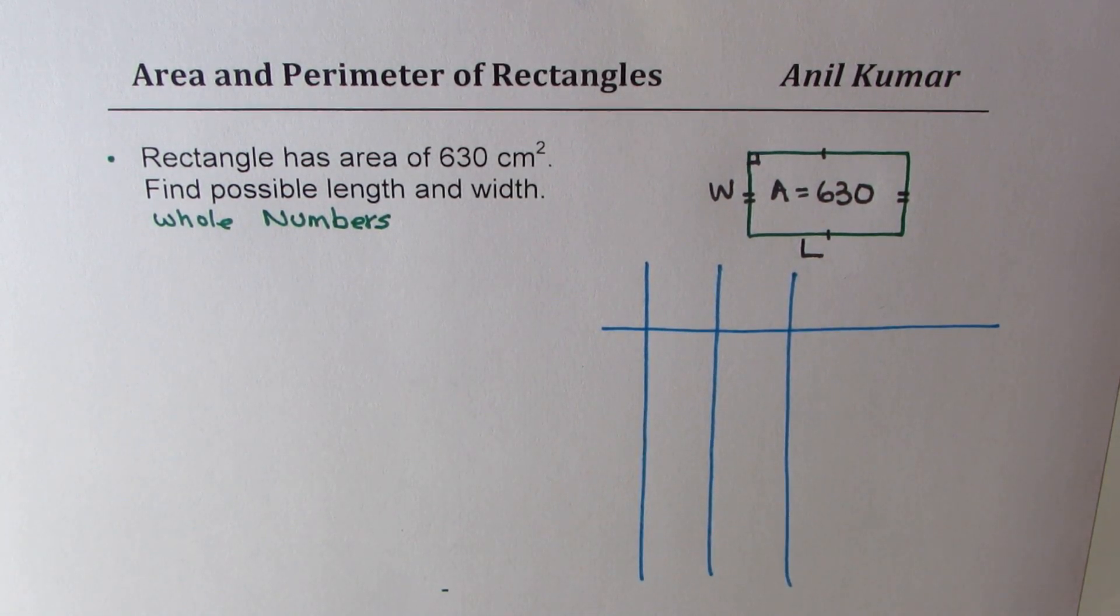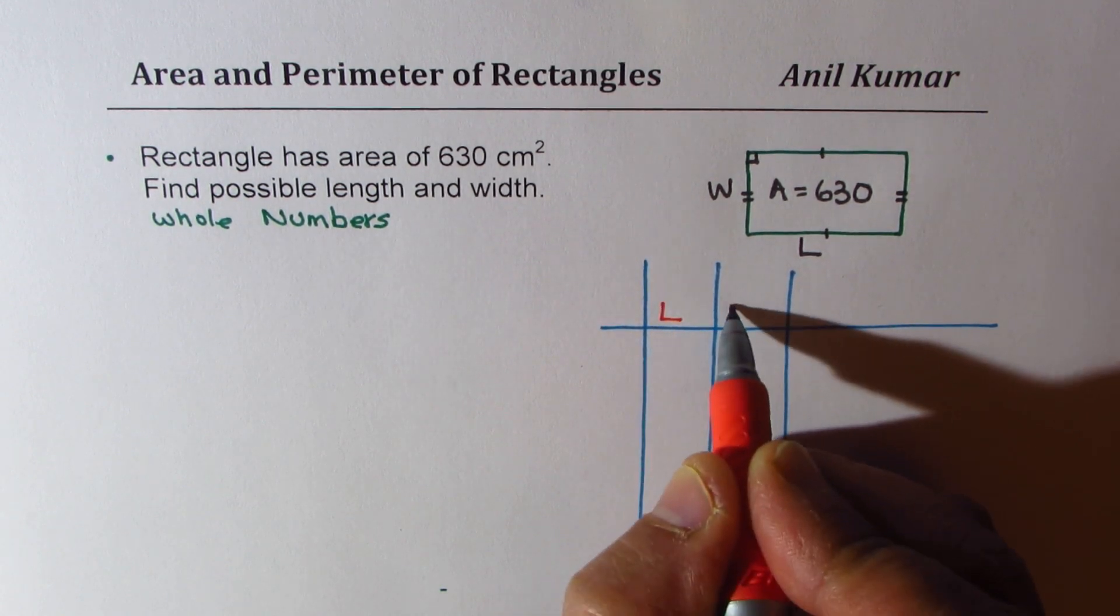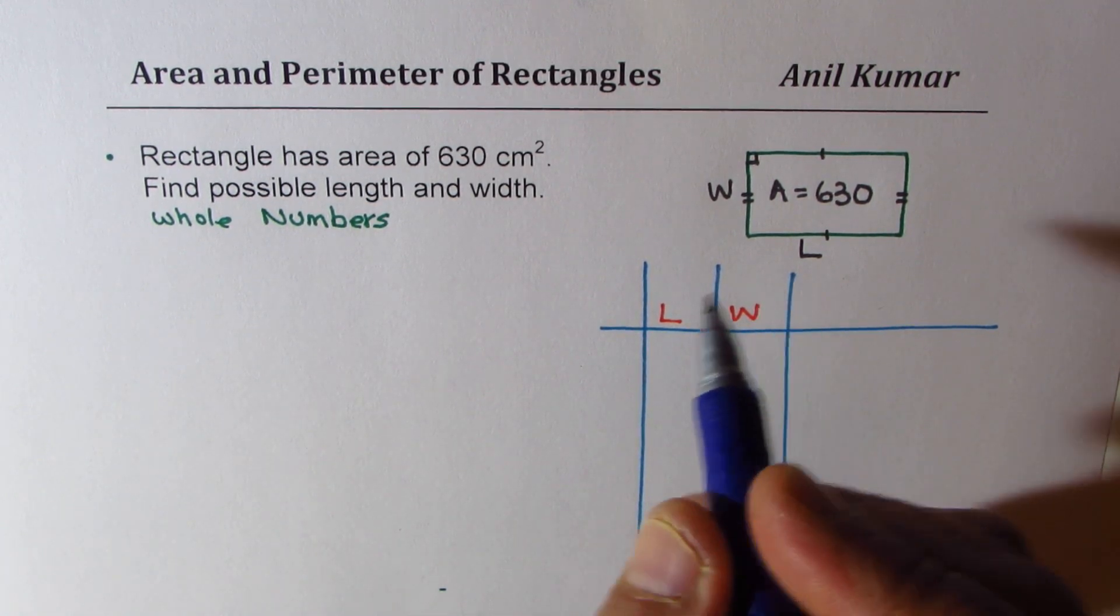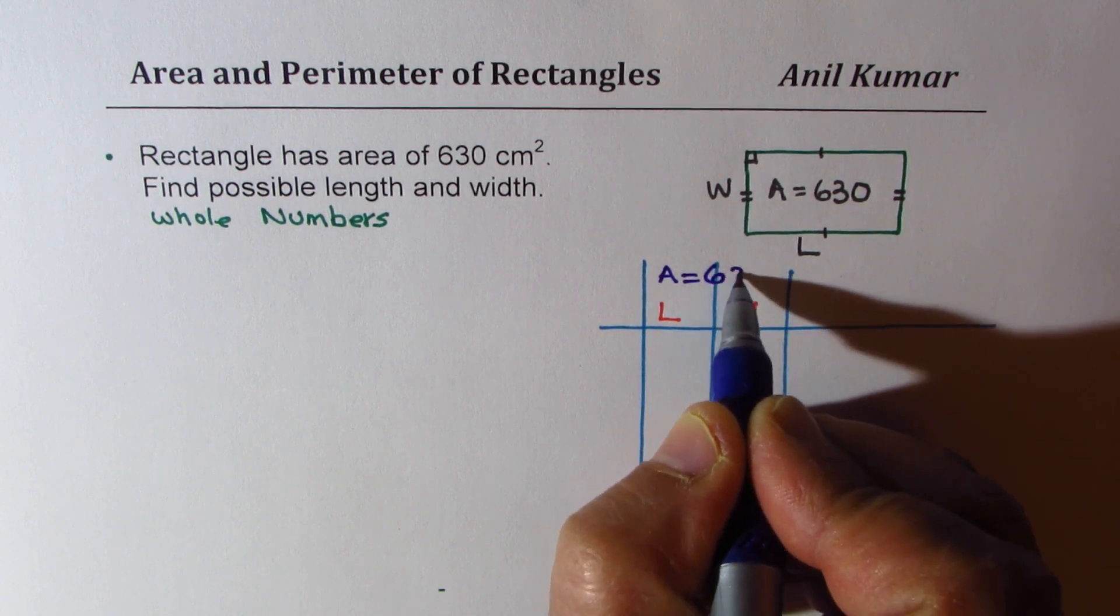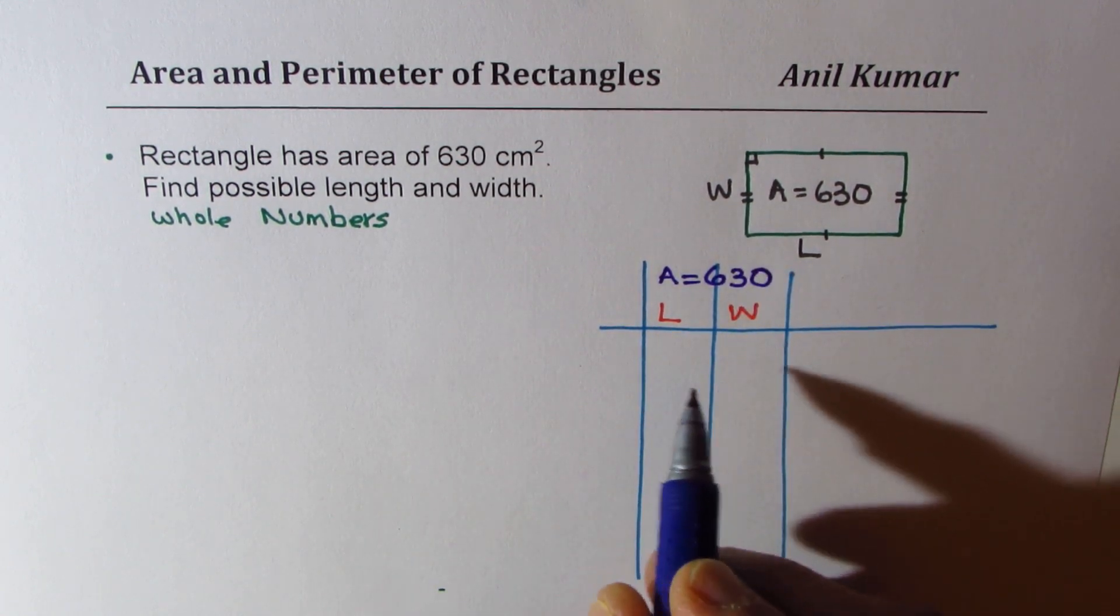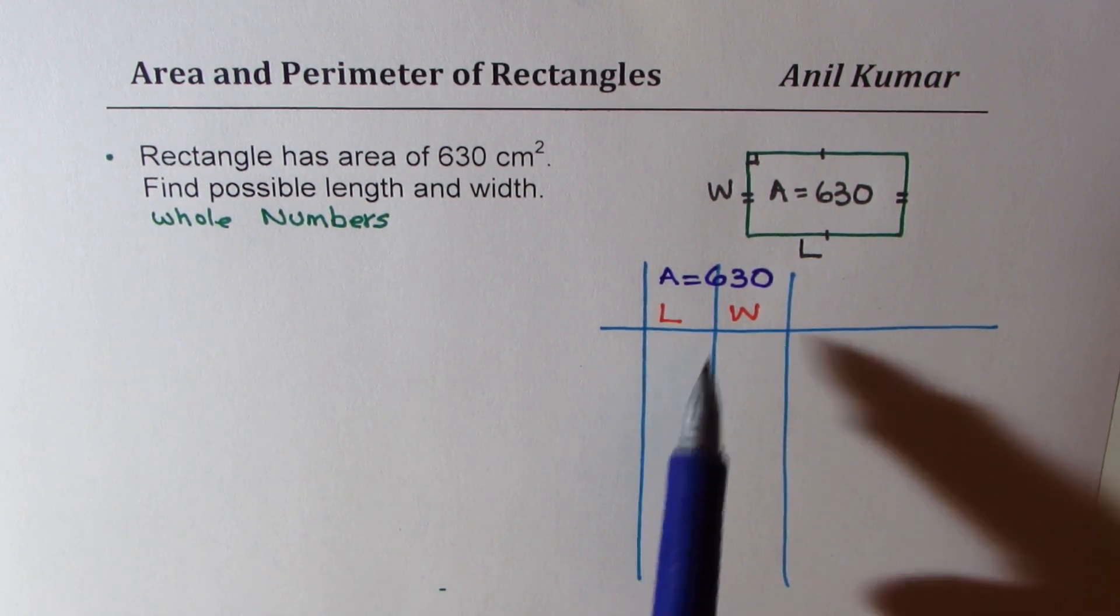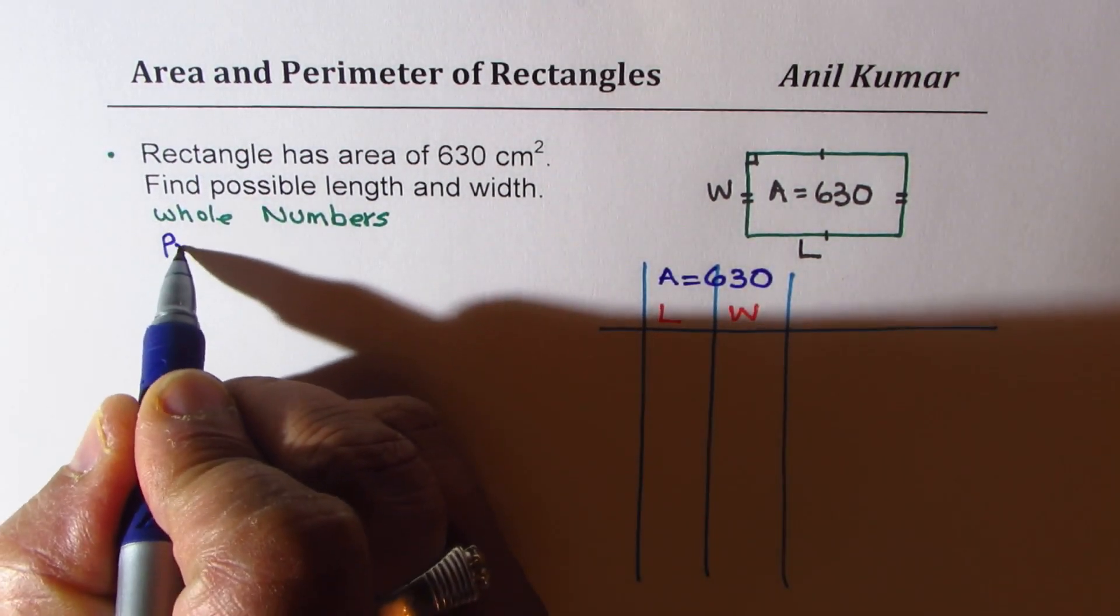So the first thing is to find combination of length and width so that we have area of 630, which gives you area of 630. How do you get all possible combinations? That's another very important thing. For that, we will do prime factorization.